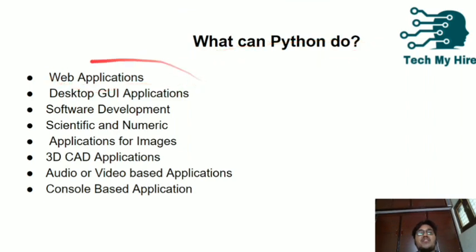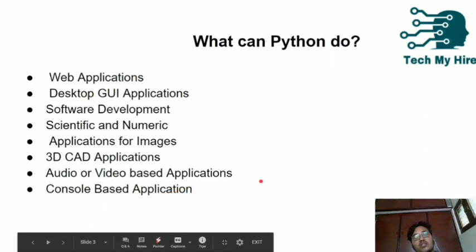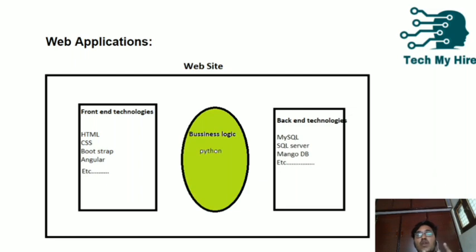What can we do with Python? We can do web applications, desktop GUI applications, software development, scientific and numeric applications, image processing applications, 3D CAD applications, video or audio based applications, and console based applications. Python is a language in which we can do whatever we want.